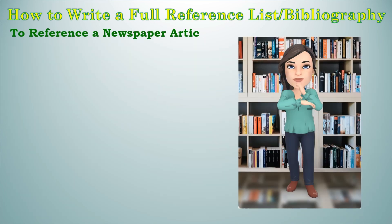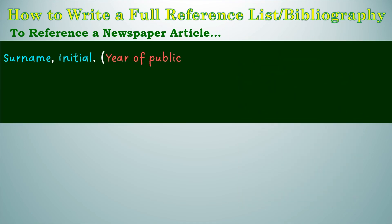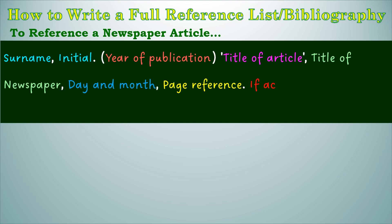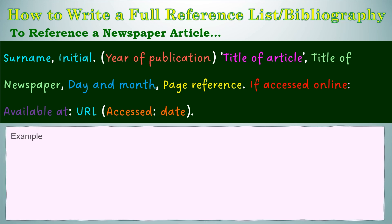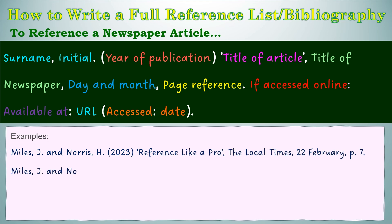To reference a newspaper article you will need: the surname of the author, comma, initial, full stop, open brackets year of publication, close brackets, open quotations, title of article, close quotations, comma, title of the newspaper, comma, day and month of publication, comma, page reference, full stop. If accessed online, you'll also need the words 'Available at:' colon, the URL, and then in brackets 'Accessed:' and the date that you accessed it, and at the end a full stop. Here's an example of both a paper-based and an online newspaper article.